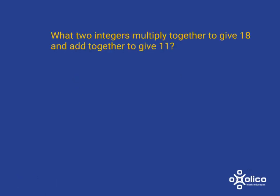We're asked: what integers multiply together to give 18 and add together to give 11? Integers can be either negative or positive. We know a positive times a positive gives a positive, but also a negative times a negative gives a positive. However, since they must add to give 11, which is positive, we're dealing with two positive numbers.